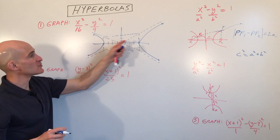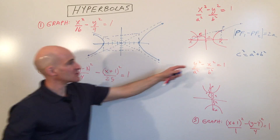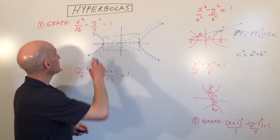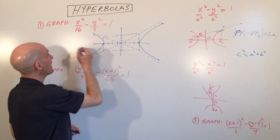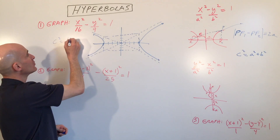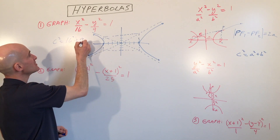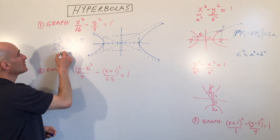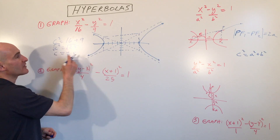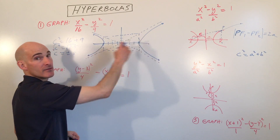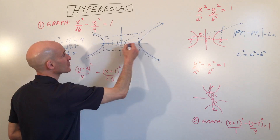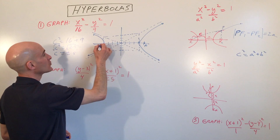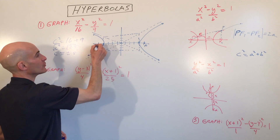The next thing we want to do is find the coordinates of the foci. We use c-squared equals a-squared plus b-squared. In this case, a-squared is 16 and b-squared is 9, so c-squared equals 16 plus 9, which is 25. Taking the square root, we get c equals plus or minus 5. The foci are on the same axis as the vertices, so we go 5 units to the right and 5 units to the left — there are our two foci.